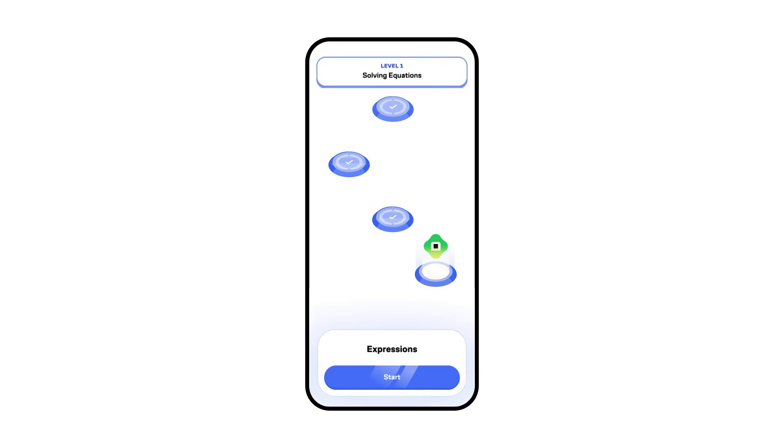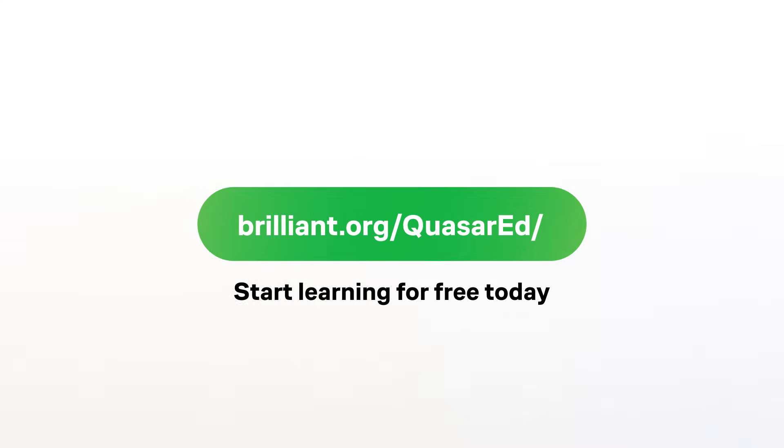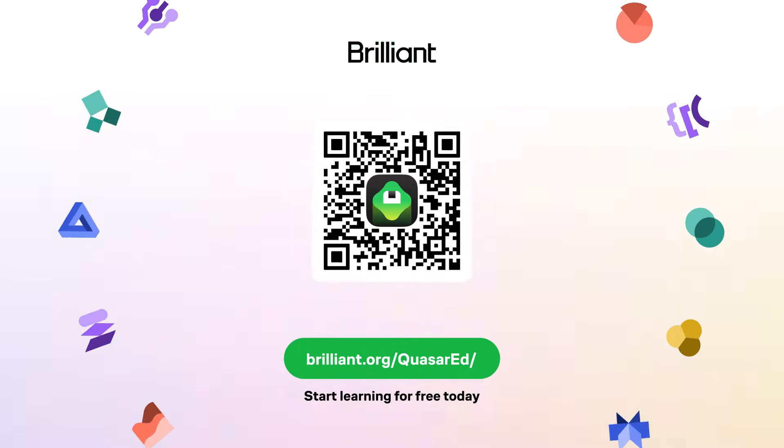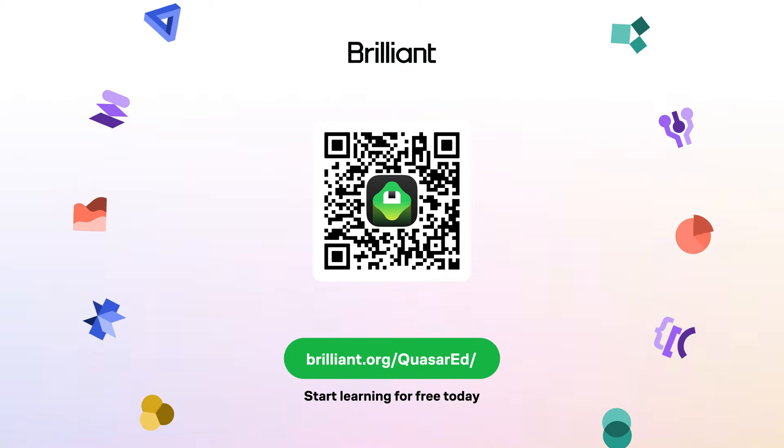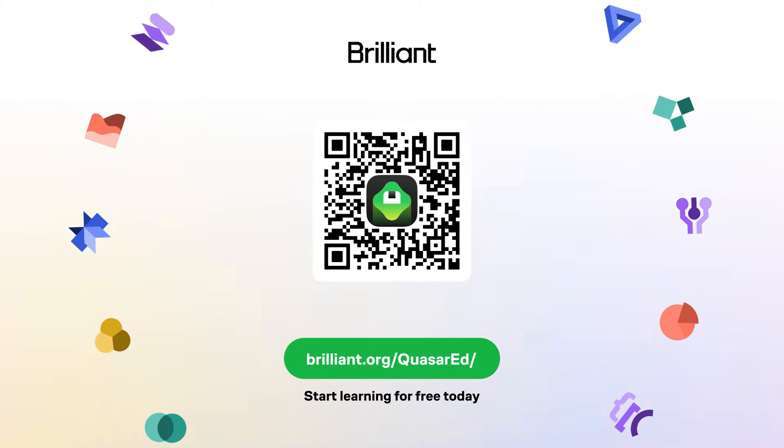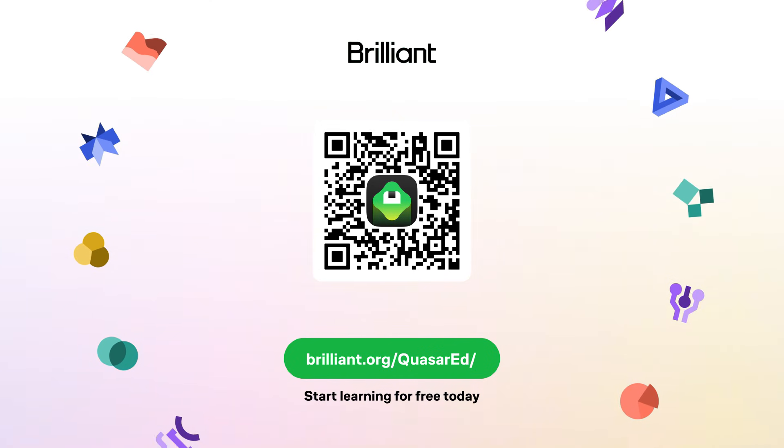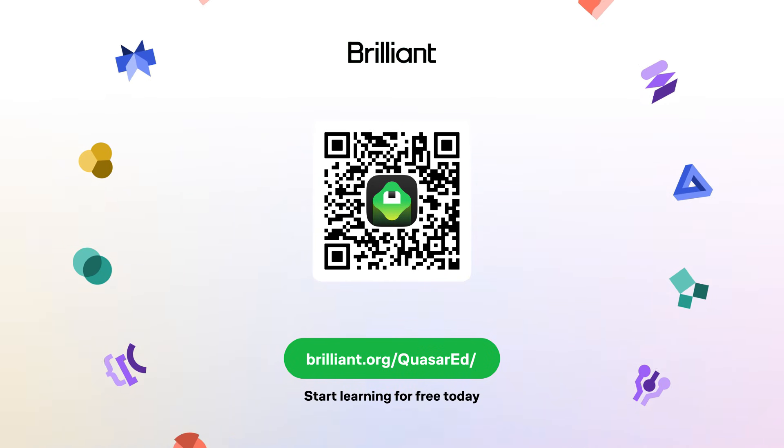To learn for free on Brilliant, go to brilliant.org slash Quasered, scan the QR code on screen, or click on the link in the description. Brilliant's also given our viewers 20% off an annual premium subscription, which gives you unlimited daily access to everything on Brilliant.